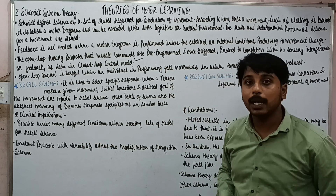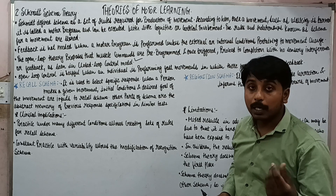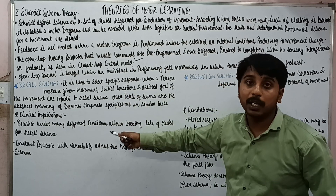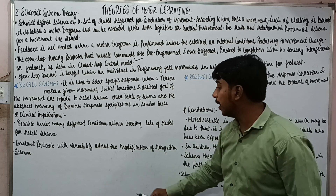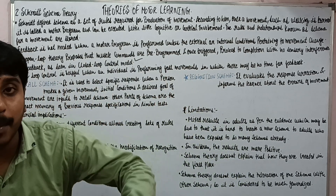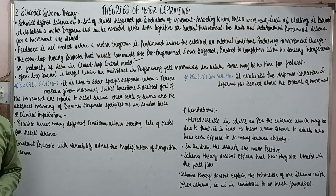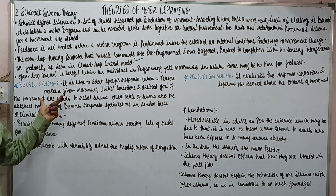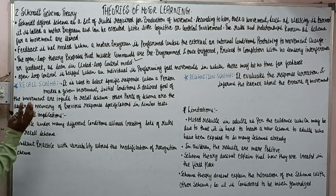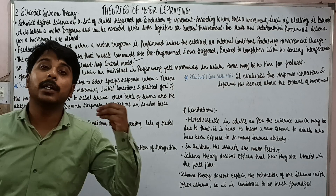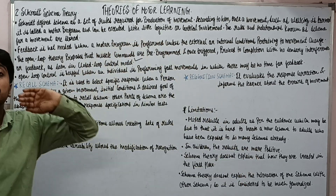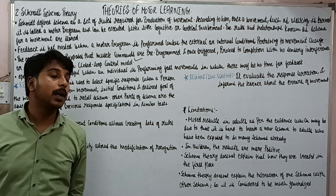Practice under different conditions — use different glasses: a square-shaped glass, a cup, different utensils — which is used to create the Recall Schema, so different recall schemas will be formed. Then constant practice with variability will allow the modification of the Recognition Schema. So if we keep doing the same movement repeatedly, our Recognition Schema will develop. To develop the Recall Schema, we need to practice under variable conditions. But for the Recognition Schema, we need to practice the same movement under the same condition for a number of repetitions.